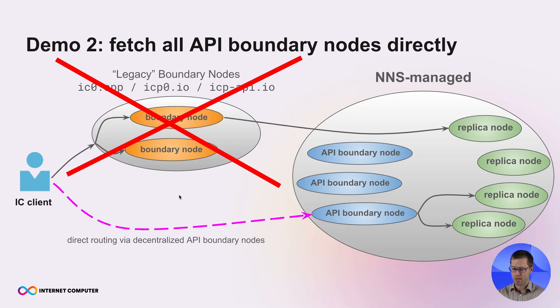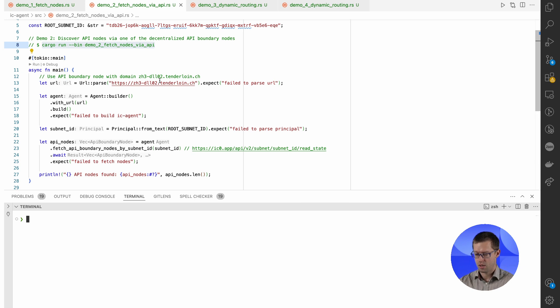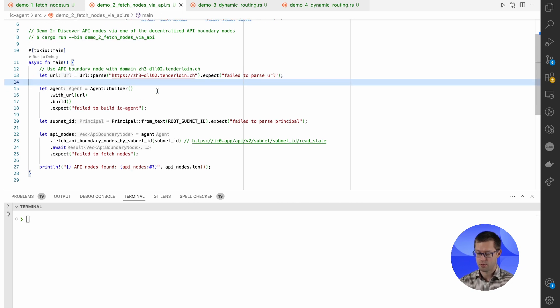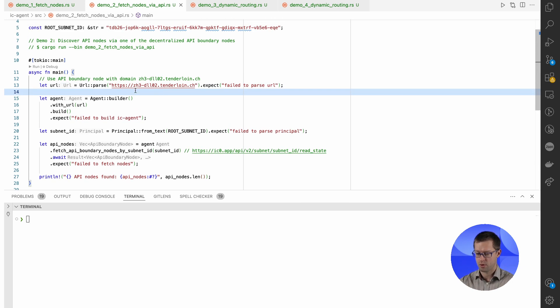So now we can do the same exercise we did just now, but route requests through one of the API boundary nodes directly, meaning we will bypass all the legacy boundary node infrastructure. The second demo looks almost identical. Instead, for the URL, we use now one of the API boundary nodes, which we just fetched before. And we can run the same demo.